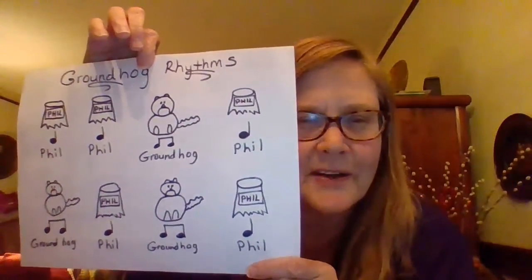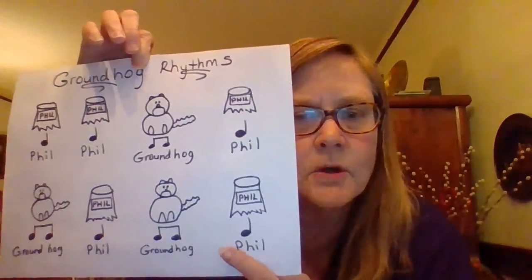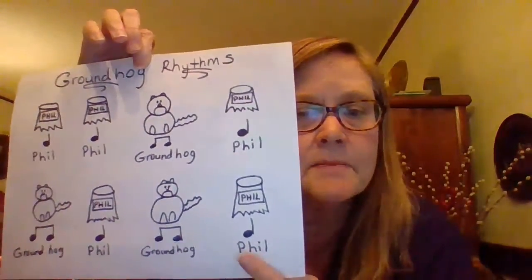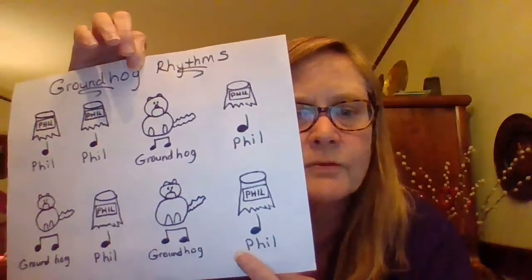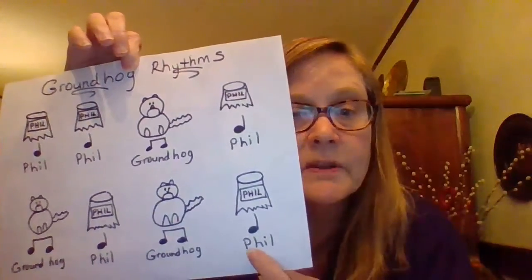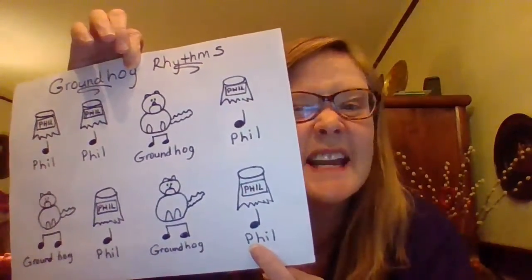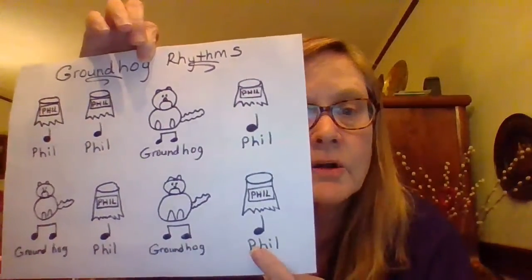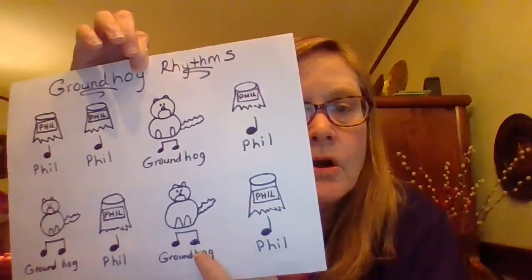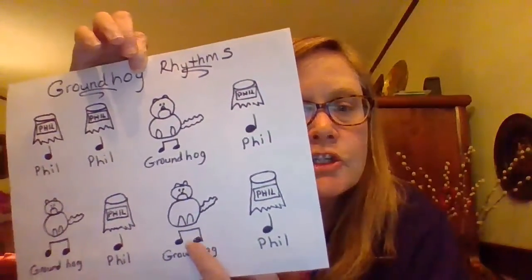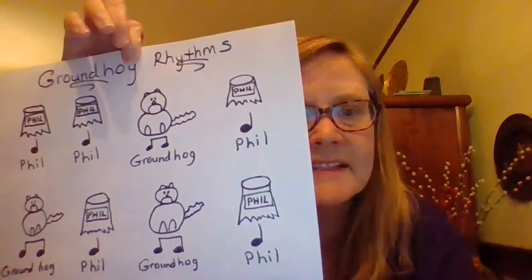Now, there is a very famous groundhog. His name is Phil — Punxsutawney Phil, to tell you his whole name — but we're just going to call him Phil today. When you see a picture of a tree trunk, I have written a 'ta' and I've written the word Phil above it. So that means you clap one beat and you just say 'Phil.' The other word in our groundhog rhythm is the word 'groundhog.' When you see the word groundhog, you're going to see two TTs and a picture of a groundhog. I know he looks like a cat, but I did the best I could.